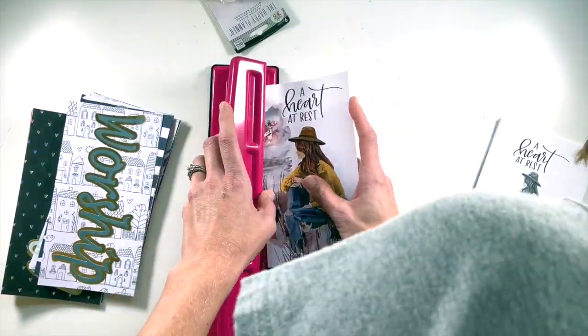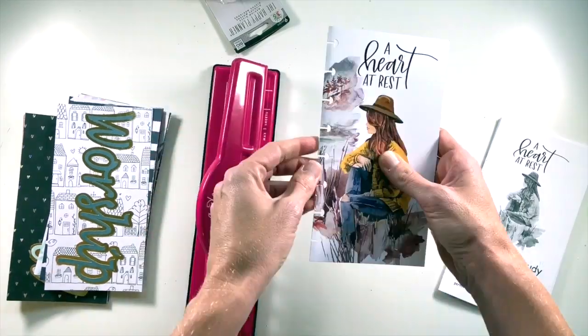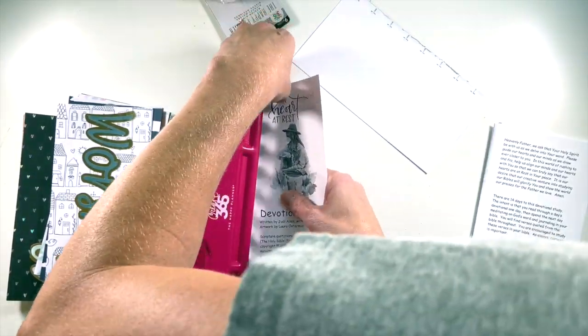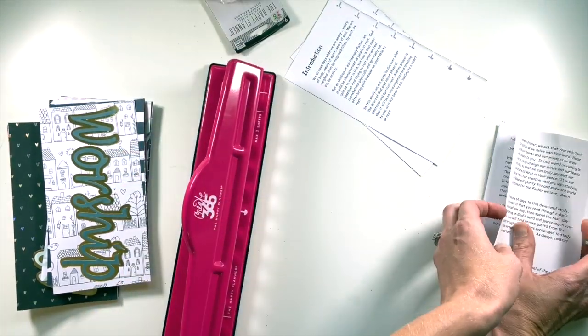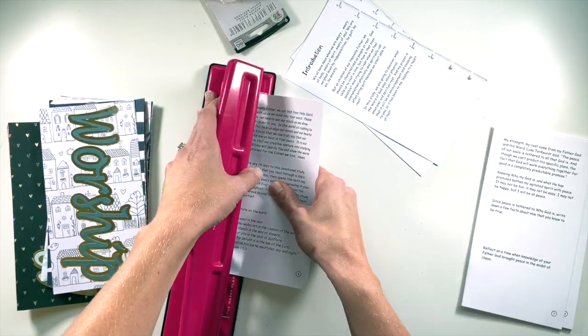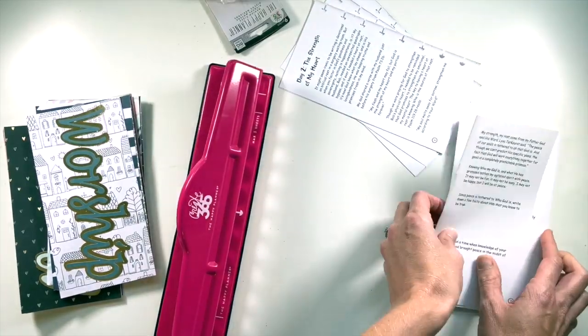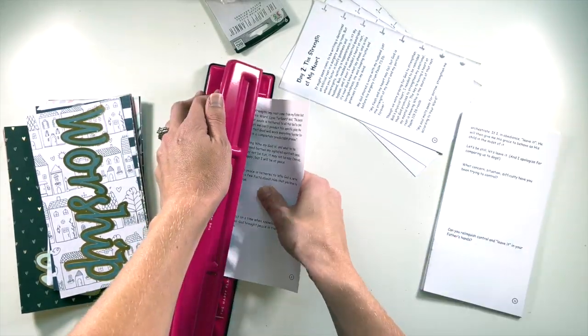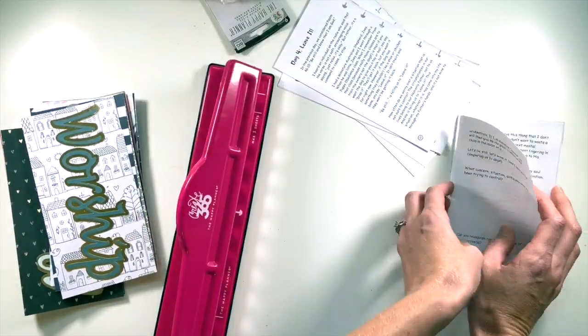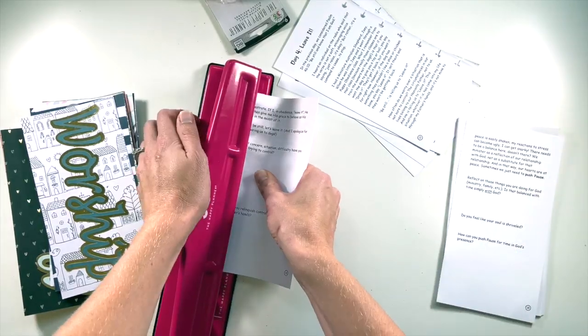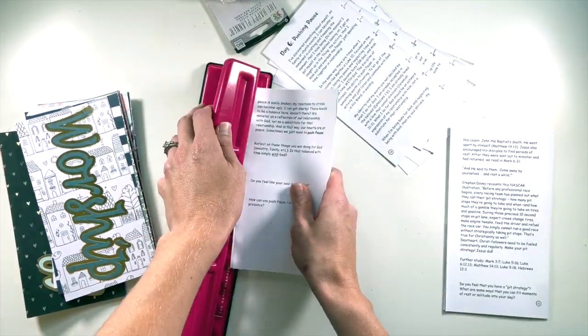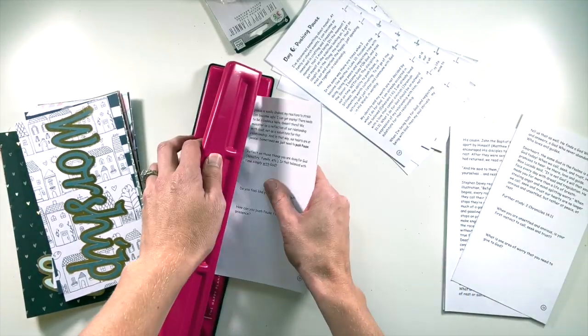I am using the Create 365 hole punch, and this is designed for happy planners. Before I started punching, I tested it out on some scrap paper that I cut to about the same size, because I wanted to see where I should line up the paper, how I wanted the holes to land, so I wouldn't end up with a half hole at the end. Really make sure you check that out before you start hole punching.